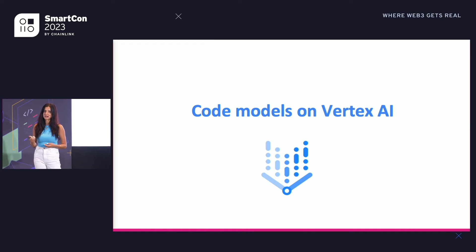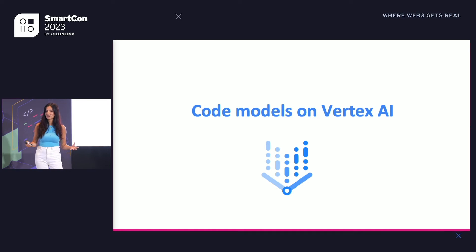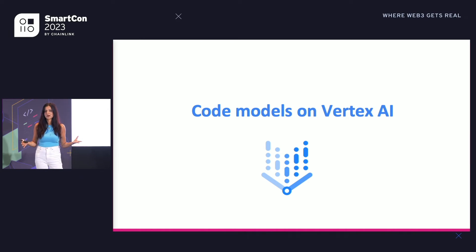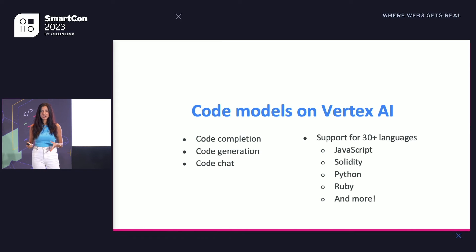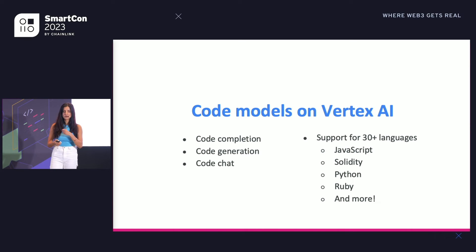All of the responses I've shown you today come from the code models on Vertex AI. These are large language models hosted on Google Cloud that are specialized for programming — trained to help you generate new code. You can use them for code completion, code generation, and code chat. They support over 30 languages, meaning you can generate code in JavaScript, Solidity, Python, and much more.